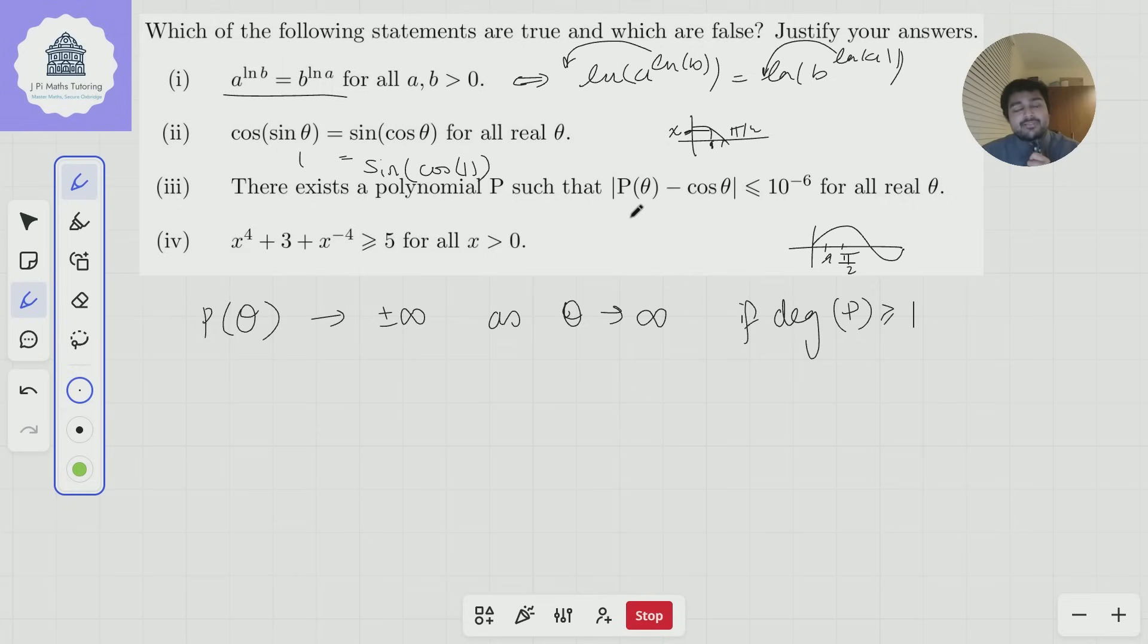And the idea here is, well, cos θ is only 1 or minus, or like between 1 and minus 1. So the difference between P(θ) and cos θ is still going to be at least like 99. And so definitely not going to be less than or equal to 10^(-6).